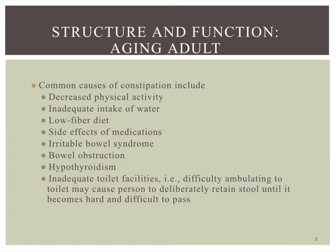We always talk about the aging adult in each chapter. A common issue for aging adults is constipation — I'm sure we all know one or two elderly people who complain about their bowels. They have a lot of factors working against them: decreased physical activity, not drinking enough water, and when I talk about a low fiber diet, think about what's cheaper — fresh fruits and vegetables, or processed and canned foods, which are typically lower in fiber.